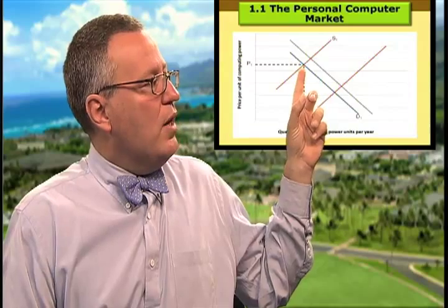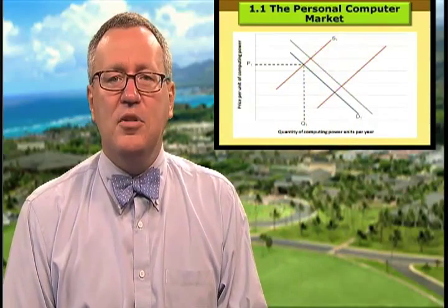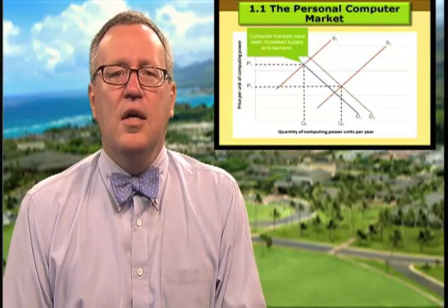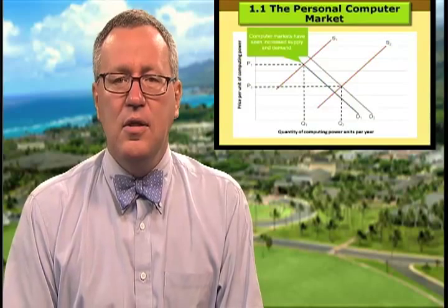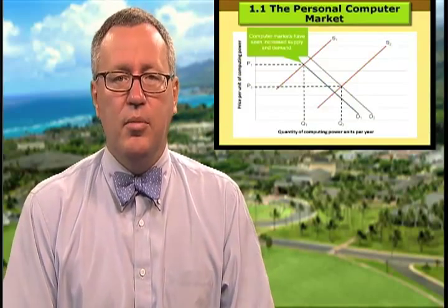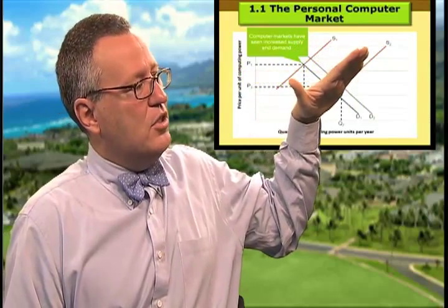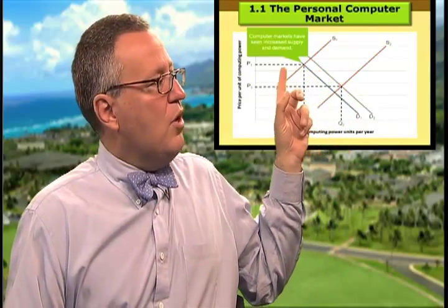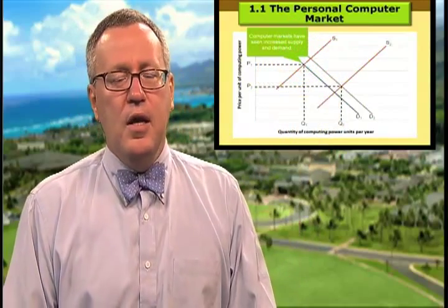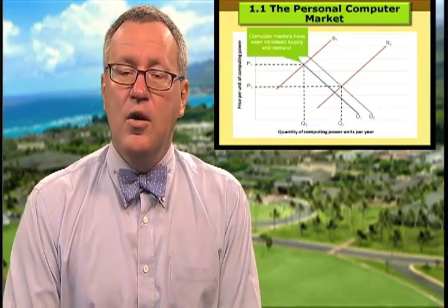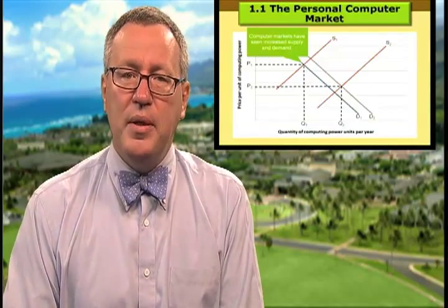We start with an equilibrium position at price one and quantity one, where demand one crosses supply curve one. Then the computer markets are going to see an increase in both supply and demand. More computer manufacturers enter the mix, selling around the world without constraints. The supply curve shifts, dropping the equilibrium price. While supply is expanding the market, we're also having an increase in demand — all of a sudden we have more computers and an interesting array of technologies causing more people to enter the market.